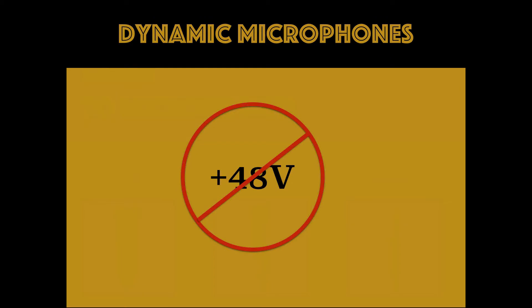Let's talk about dynamic microphones first. The primary trait that describes a dynamic microphone is that they do not require an external source of power. The dynamic microphone works by having some sort of moving element within a magnetic field, which then generates what is called an electrodynamic signal.